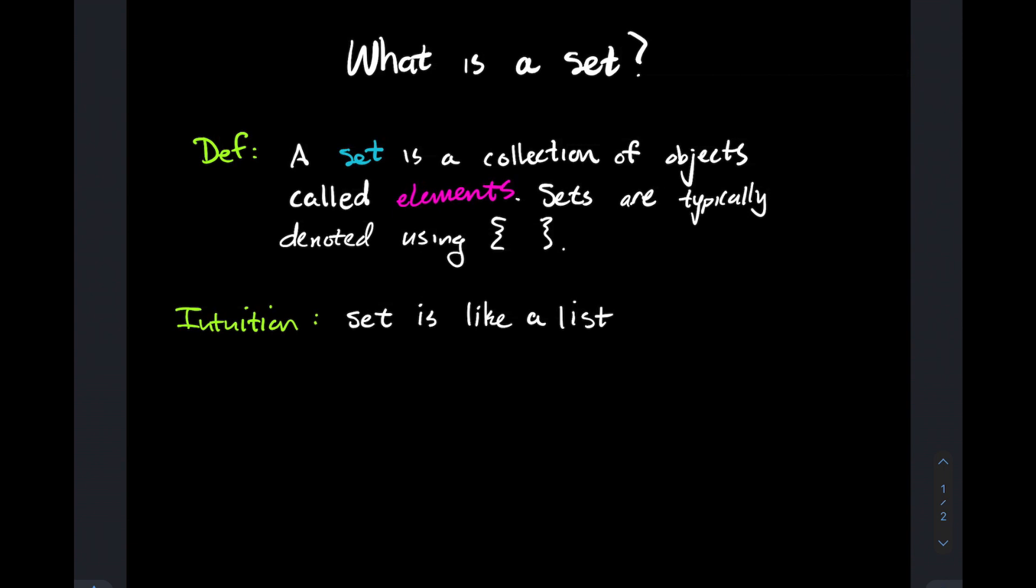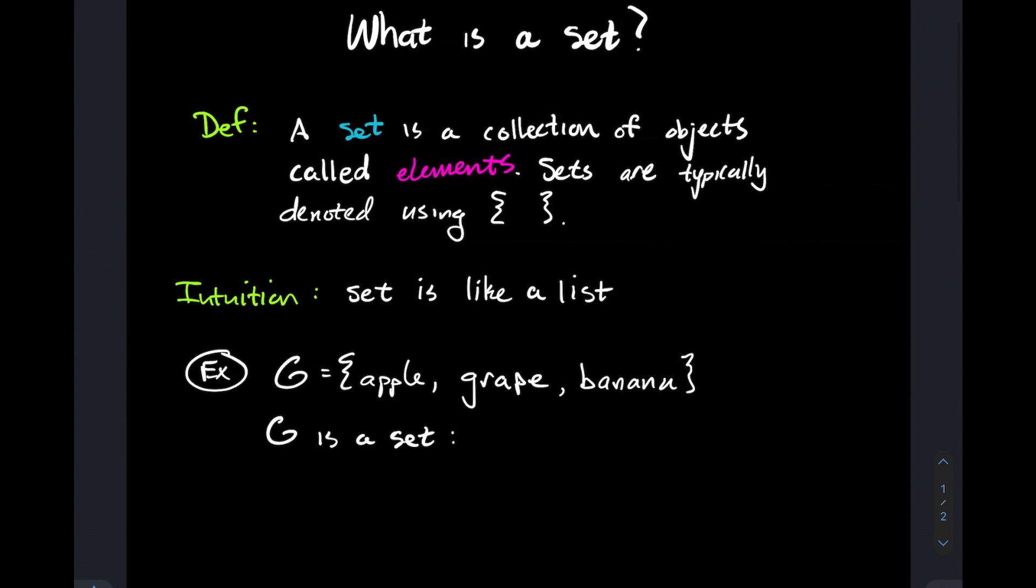Let's get started with an example. Let's take capital G to be the set containing apple, grape, and banana. Notice I've separated the objects by a comma. So if I look back to the definition, it's a collection of objects and we call those objects elements. This is a set because the objects in the set are apple, grape, and banana. That's all we're checking for something to be a set.